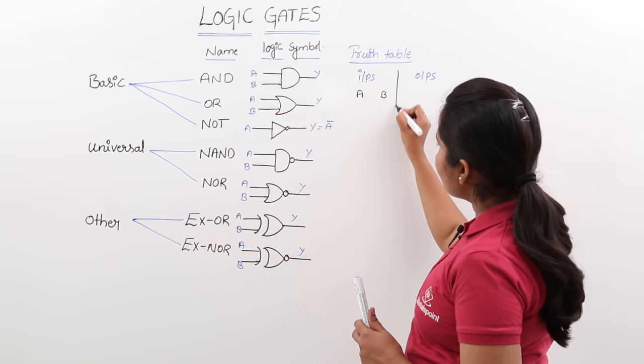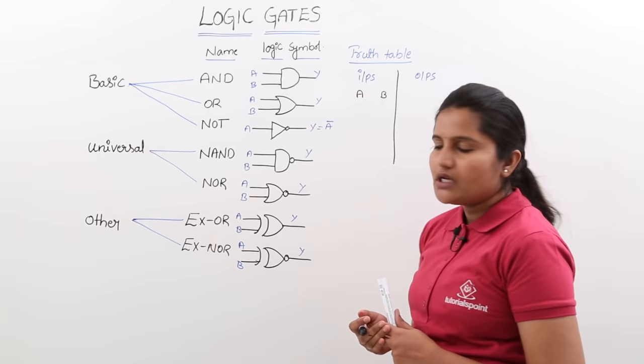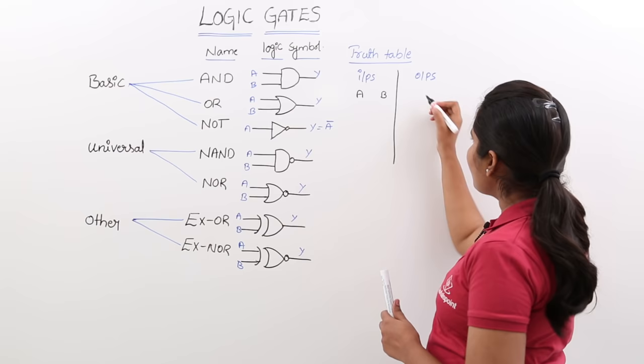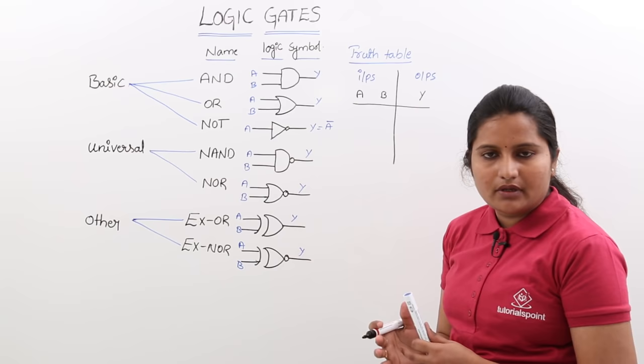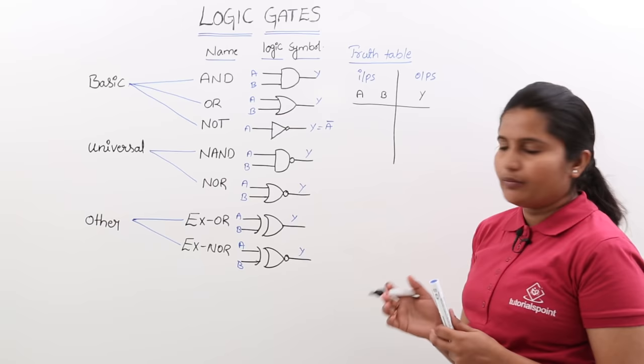We take all the combinations for those inputs, and next in the output column we represent whatever the output is. By completing this truth table, just by looking at it we can say what the output is for a particular combination of inputs.